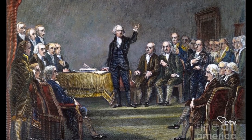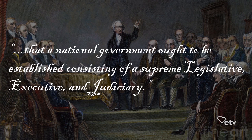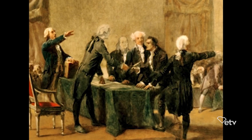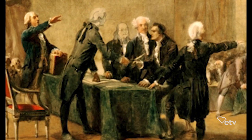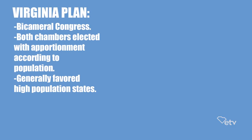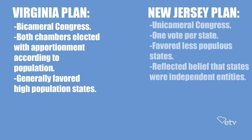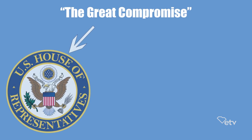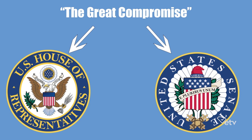It was proposed during this convention that a national government ought to be established consisting of a supreme legislative, executive, and judiciary. Of course, when it came to creating these new branches of government, not every Founding Father saw eye to eye. Some supported the Virginia Plan, while others supported the New Jersey Plan. This ultimately led to the Great Compromise, which is how the House of Representatives and the U.S. Senate came to be.